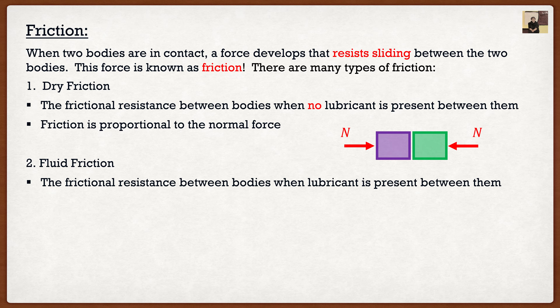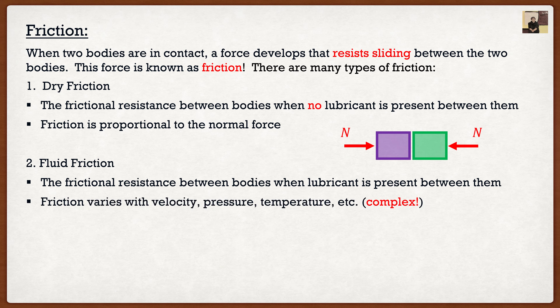The second type is fluid friction — this is the frictional resistance between two bodies when a lubricant is present. What happens is a thin barrier forms between the two surfaces, which allows them to slide a lot more easily. The problem is friction becomes a function of velocity, pressure, and temperature — basically a function of everything. So the analysis gets quite complex, and we don't consider it too much in this course.